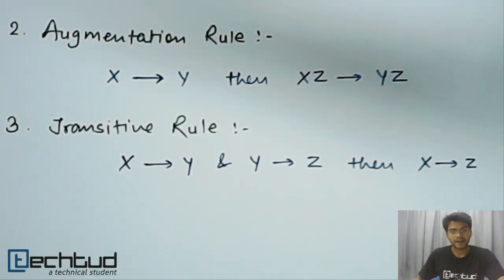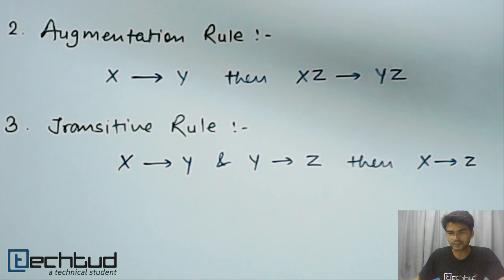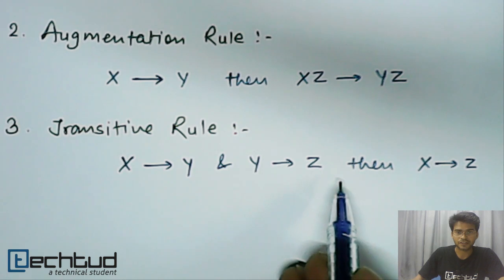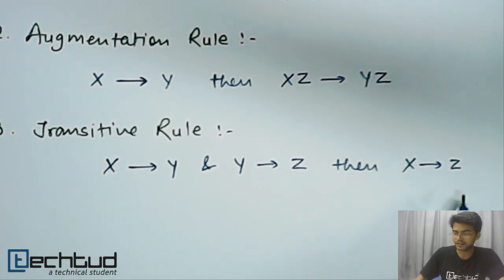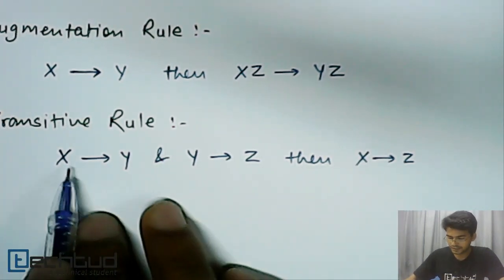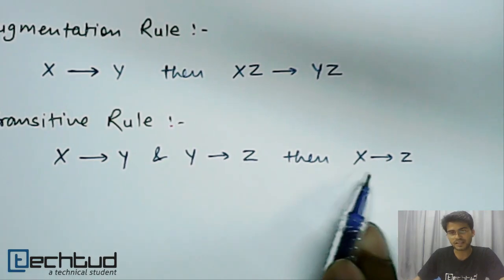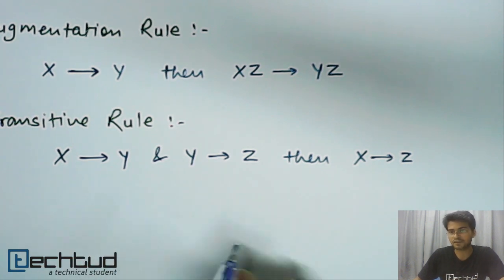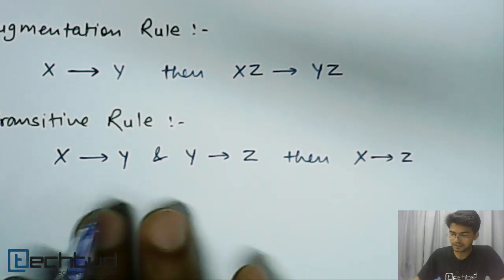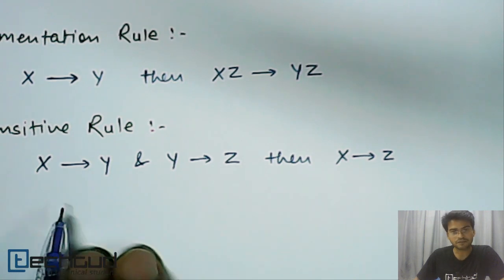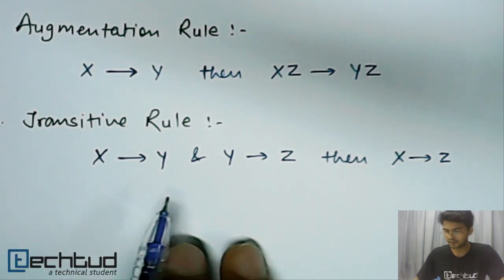The next rule is the transitive rule. As the name suggests, using transitivity we can determine something. If x can determine y and y can determine z, then we can indirectly determine z through x — that is, x can determine z. This is something like saying if a is a friend of b and b is a friend of c, then a is a friend of c. This is transitivity and it applies in functional dependency in relational databases. This is our third inference rule.